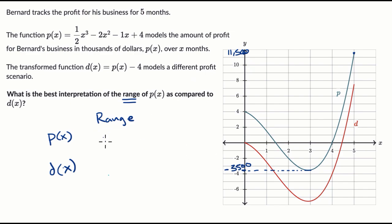So the range looks like it gets as low as, including, so that's why I'm putting a bracket here, negative $3,500. Actually, let me not put a comma there, that might get confusing. Negative $3,500, and it gets as high as $11,500.